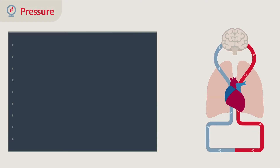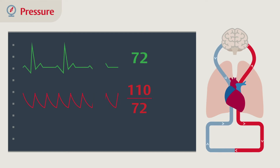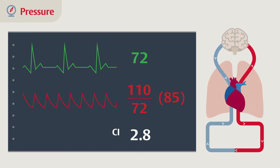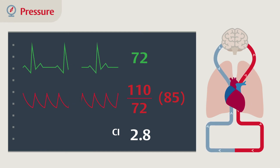This technique really optimises two things: cardiac output and oxygen delivery, and mean arterial pressure. These are the two physiological values that have a large volume of data supporting that maintaining these values reduces downstream complications. This makes sense because we're ensuring enough oxygen and nutrient delivery to organs and also adequate perfusion pressure.